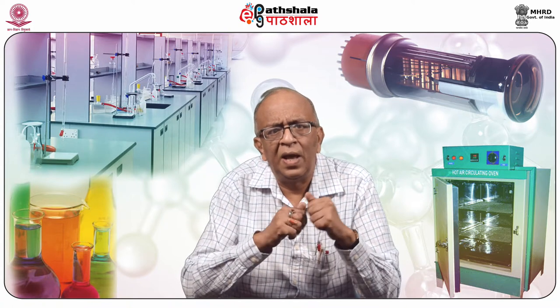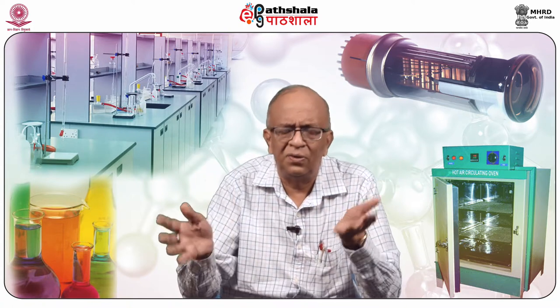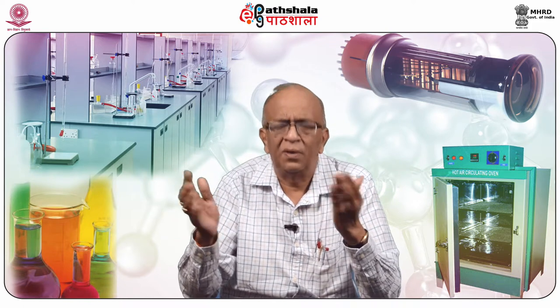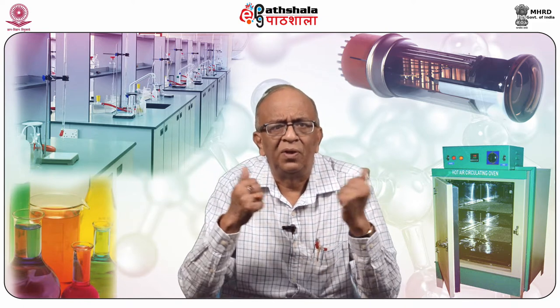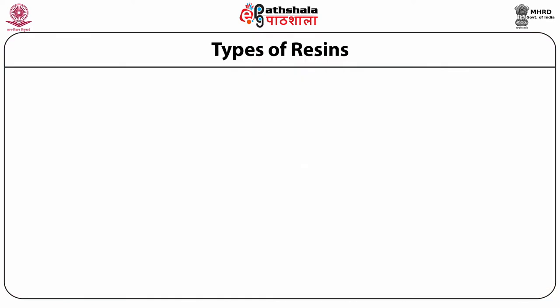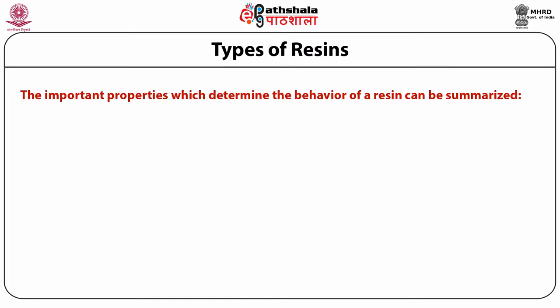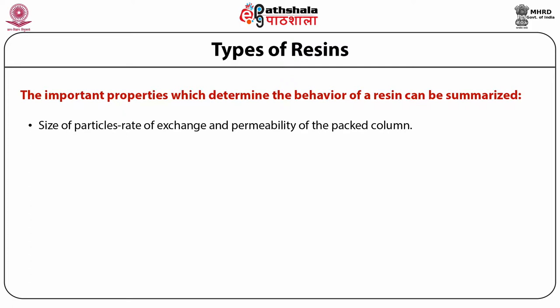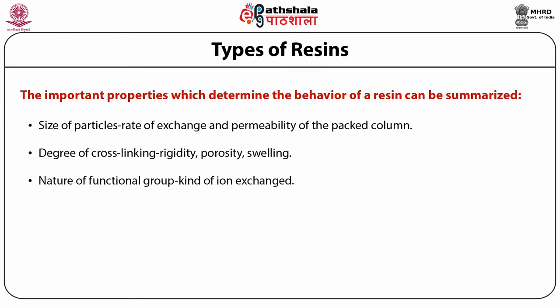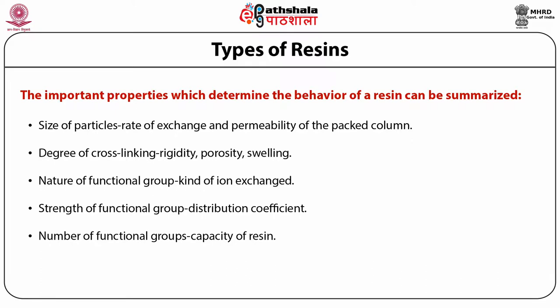When H⁺ ions are present, exchange of other cations takes place with this type of resin. The important properties which determine the behaviour of a resin are: size of particles, rate of exchange, and permeability of the packed column; degree of cross-linking, rigidity, porosity, and swelling; nature of functional group and kind of ion exchange; strength of functional group and distribution coefficient; number of functional groups and capacity of resin.